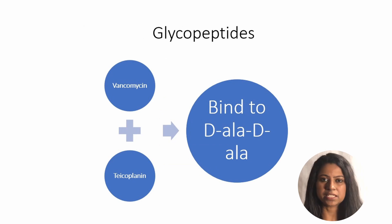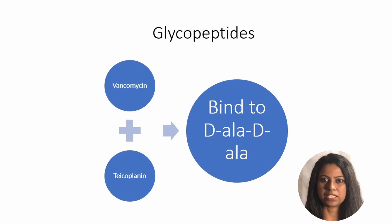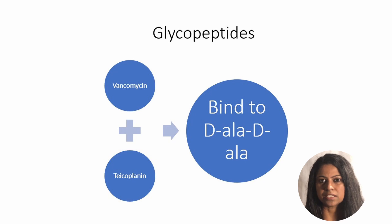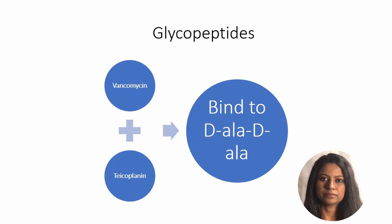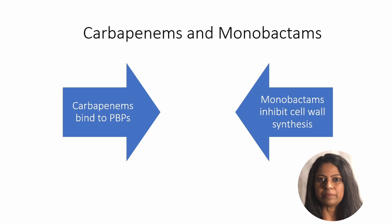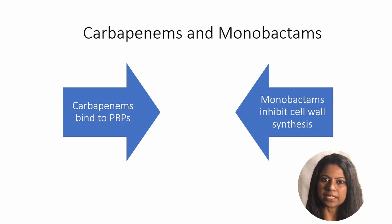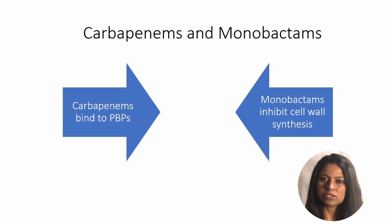Glycopeptides like vancomycin and teicoplanin directly bind to the D-alanine-D-alanine portion of the bacterial cell wall and thereby inhibit peptidoglycan synthesis. Carbapenems like imipenem, meropenem, etc. inhibit cell wall synthesis by binding to the penicillin binding proteins. Monobactams like aztreonam also inhibit cell wall synthesis in bacteria.